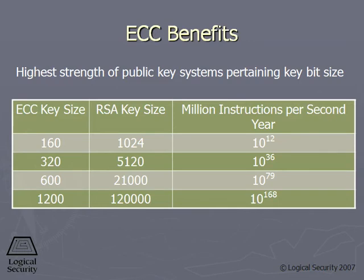With ECC, a smaller key than an RSA key can provide the same amount of protection. For example, an ECC key size of 320 bits provides the same level of protection as an RSA key of 5,120 bits. So not only does it work faster, but you don't have to have as large of a key to provide the same amount of protection that other asymmetric keys provide.